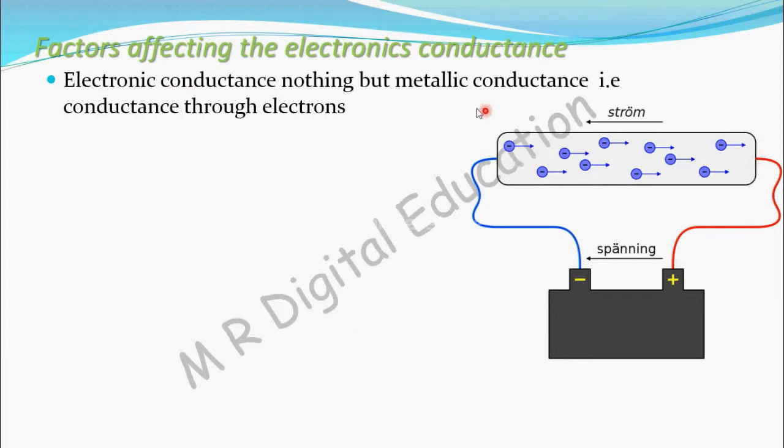Electronic conductance is nothing but metallic conductance. In metals, conductance is through electrons — that is electronic conductance. There is one more term: ionic conductance. In electrolytic solutions, conductance will be through ions. I will explain that one in the next video.